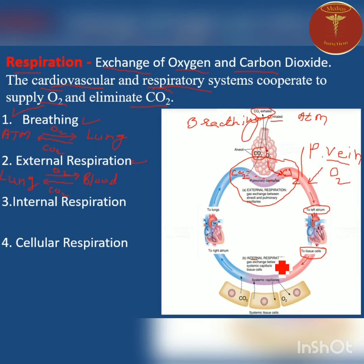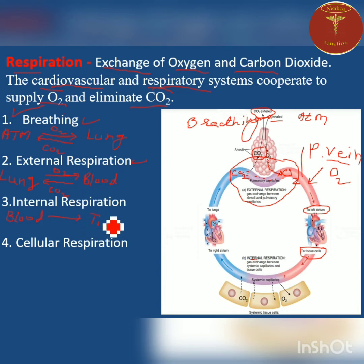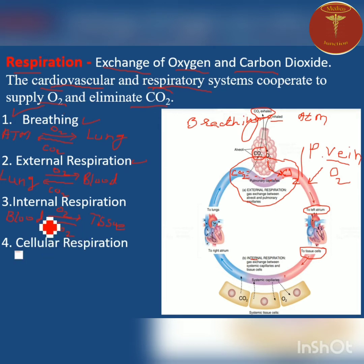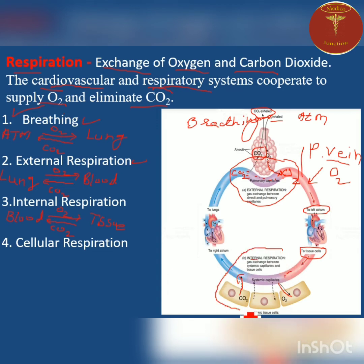The next process is internal respiration. Its definition: exchange of gases between the blood and tissue cells. Oxygenated blood from the capillaries delivers oxygen into the tissue cells, and carbon dioxide from the tissue cells enters the blood. This exchange is called internal respiration — that is, exchange of gases between the blood and tissue cells.